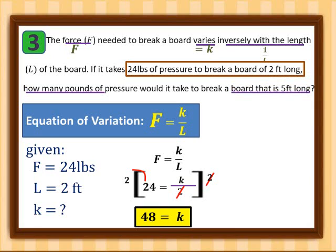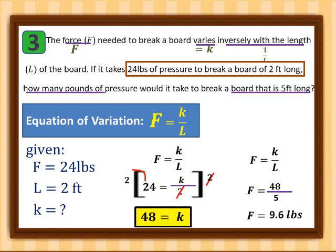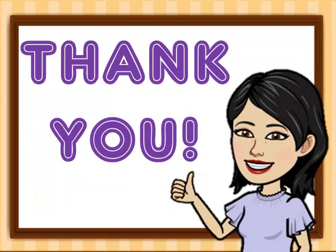How many pounds of pressure are needed to break a board that is 5 feet long? Using f equals k over l with k equal to 48 and length equal to 5, force equals 48 over 5, which is 9.6 pounds. So it takes 9.6 pounds to break a 5-foot board. I hope you've learned something about inverse variation.